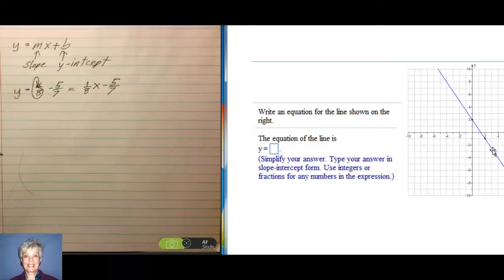You can see that the y-intercept, where's my cursor, there it is, you can see that the y-intercept is the point 0,2. In other words, 2 on the y-axis.